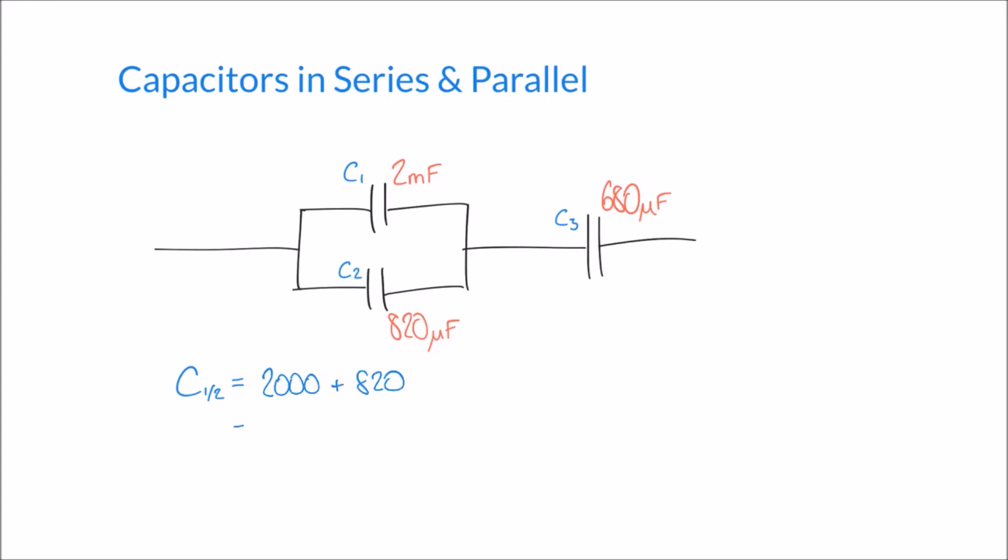And so that's going to give me 2,820 microfarads as my total capacitance of these two capacitors, C1 and C2 in parallel.